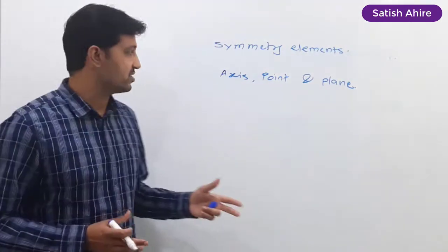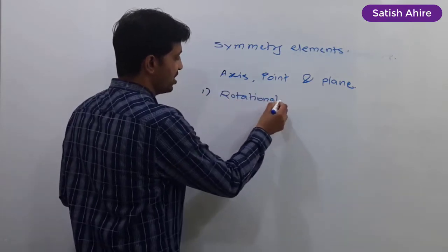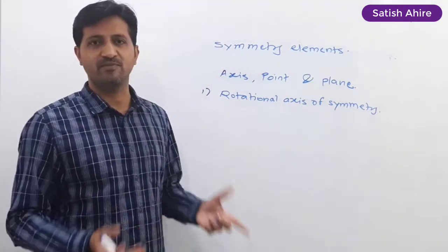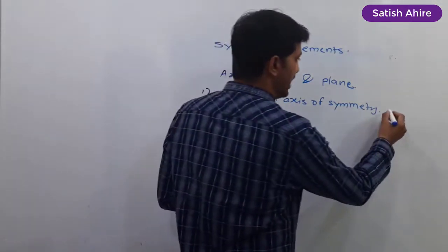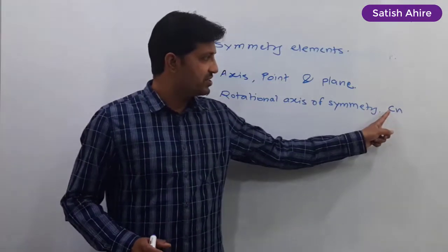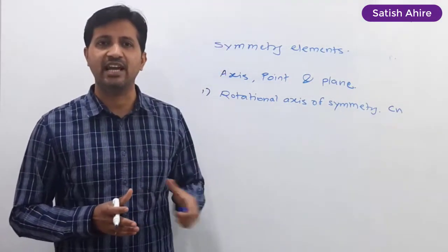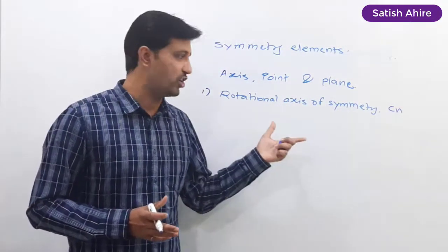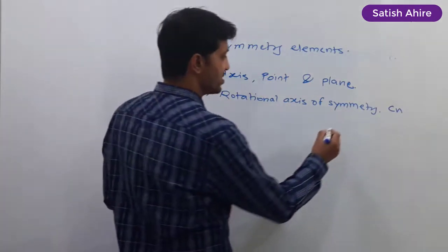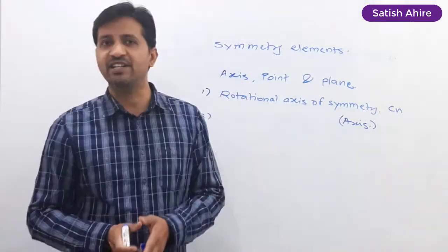The first type of symmetry element is the rotational axis of symmetry. This rotational axis of symmetry is labeled with the symbol C_N, where C stands for cyclic and N means the number of times that symmetry element is present within the molecule. This rotational axis of symmetry always involves an axis.